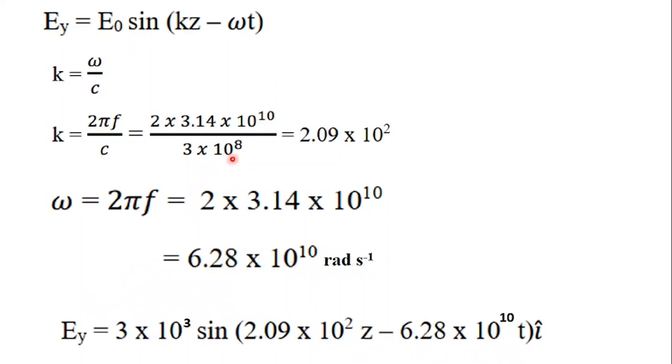Finally, substituting all values into the equation, we get Ey = 3 × 10³ sin(2.09 × 10² z - 6.28 × 10^10 t)î. Since the wave propagates along the x direction, this is identified with the unit vector î.